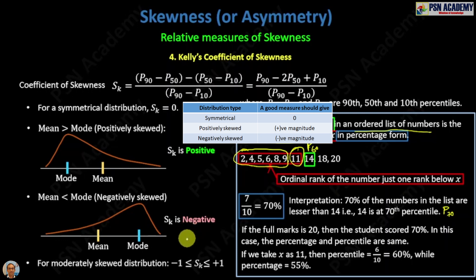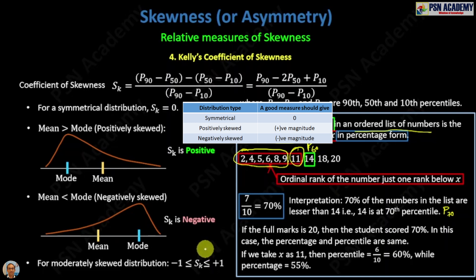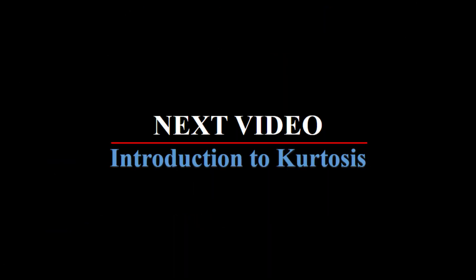The range of Kelly's coefficient is such that SK lies between minus one and plus one. I hope Kelly's coefficient of skewness is clear to you. In the next video, we will give an introduction on kurtosis.